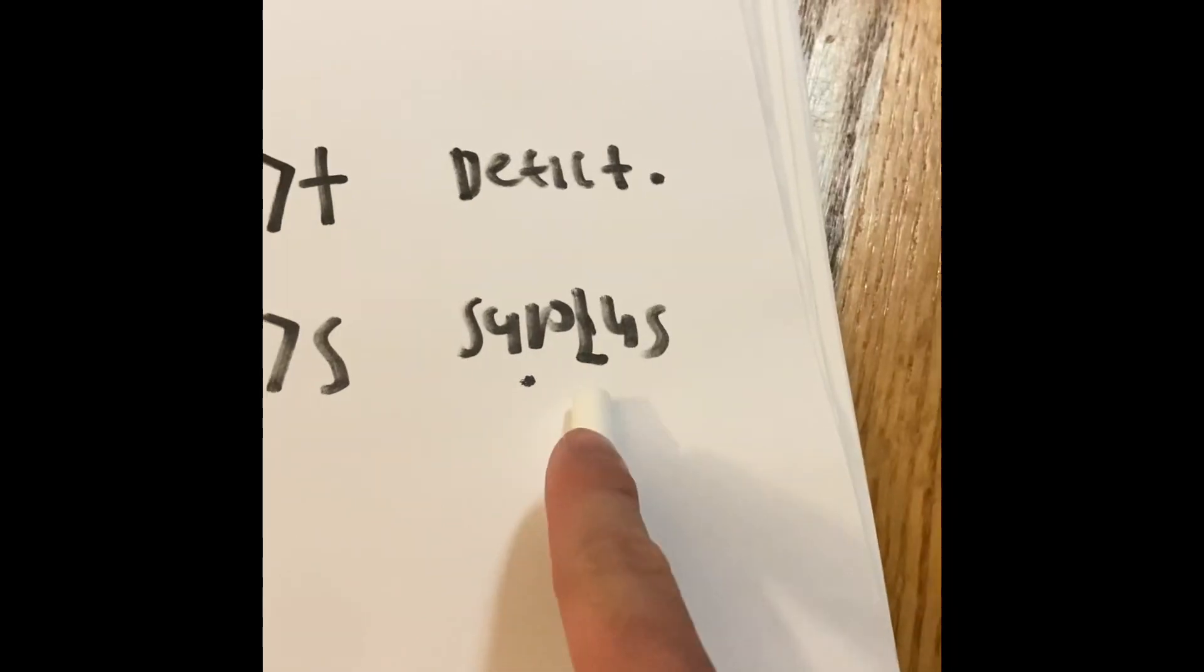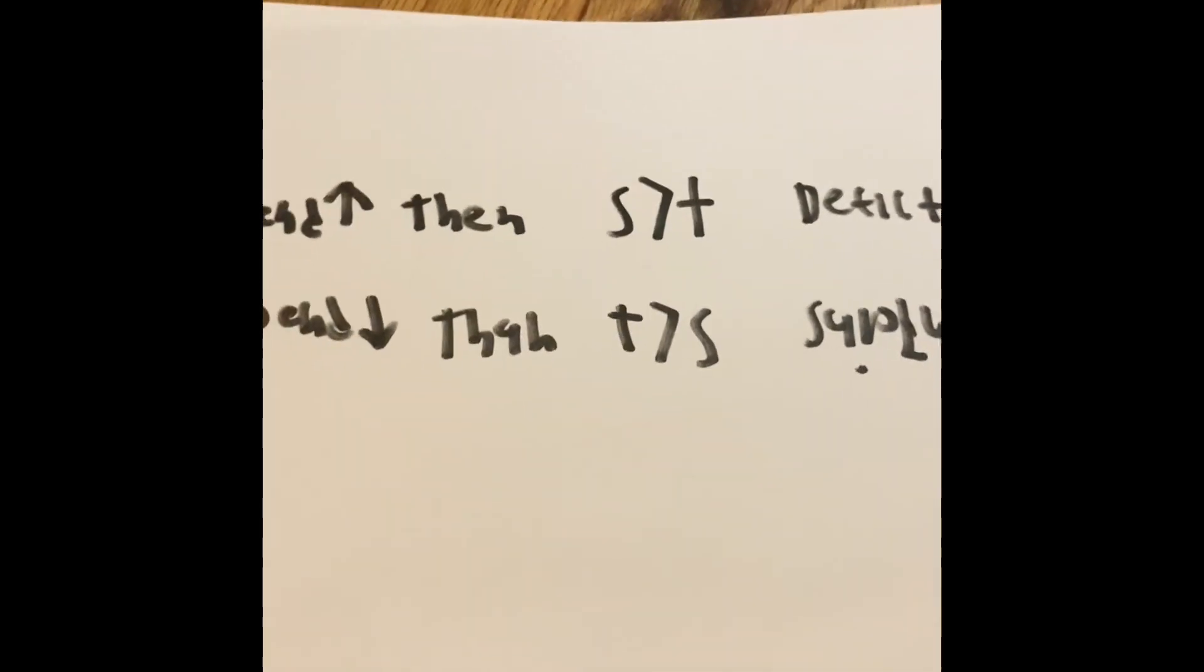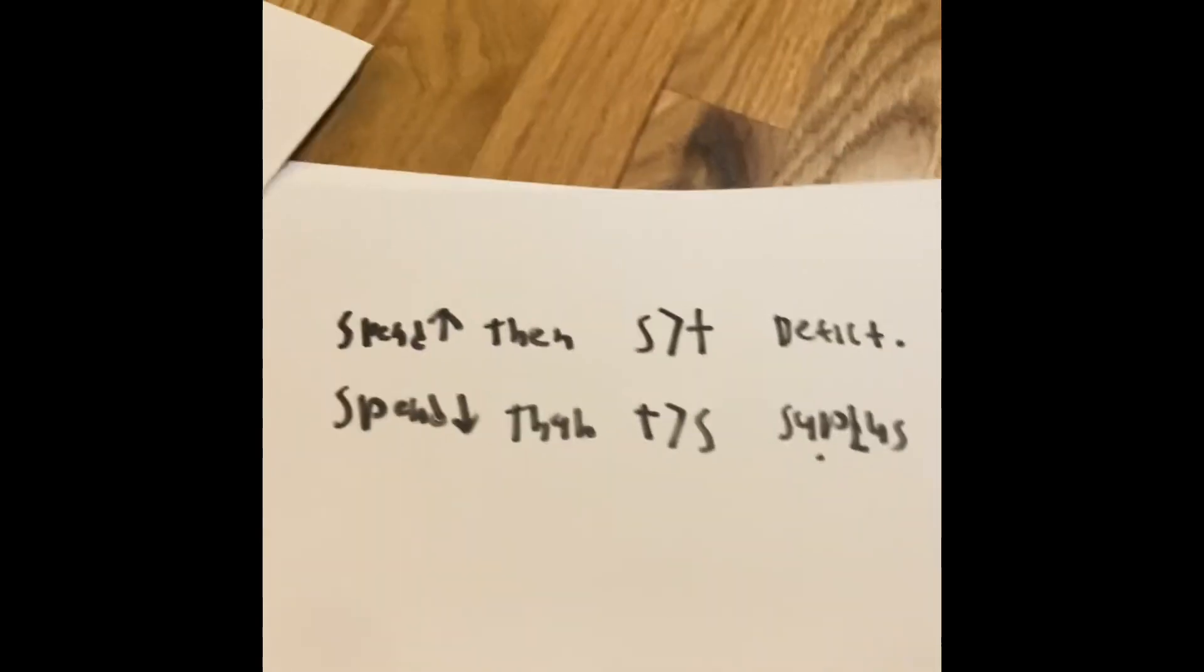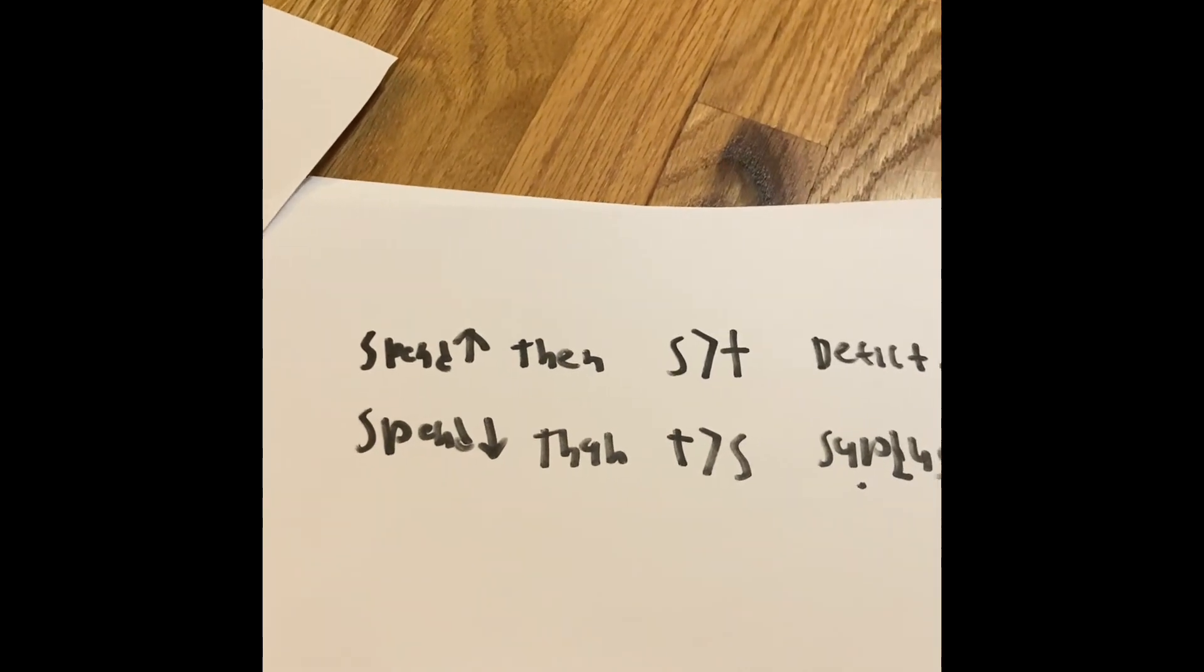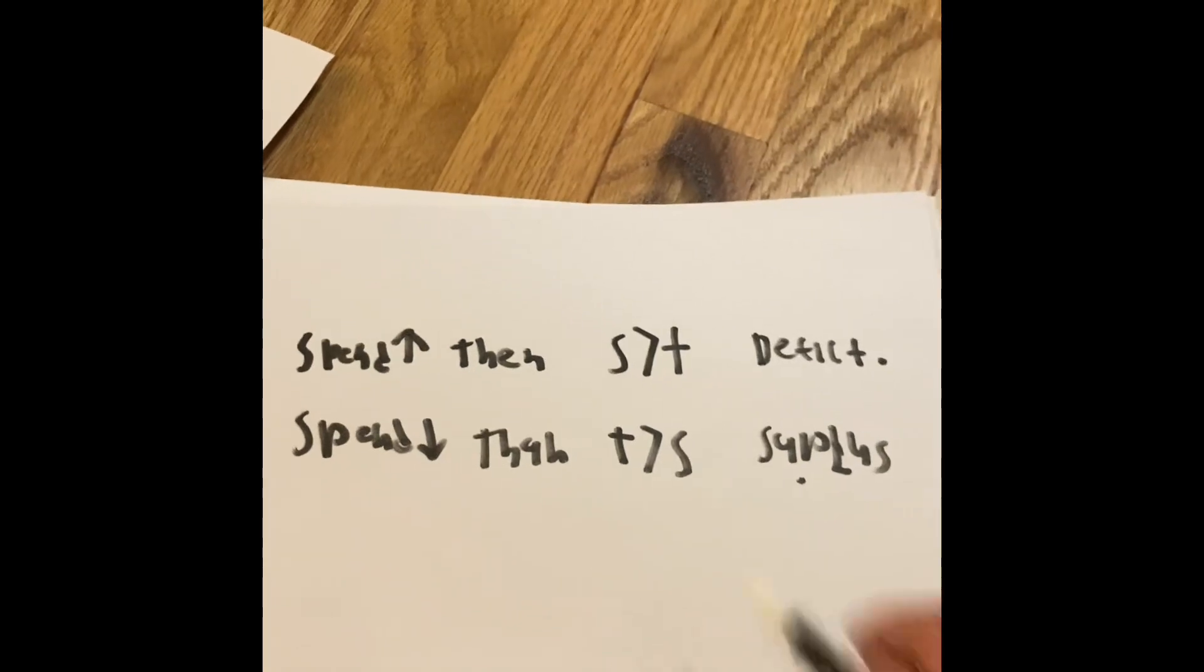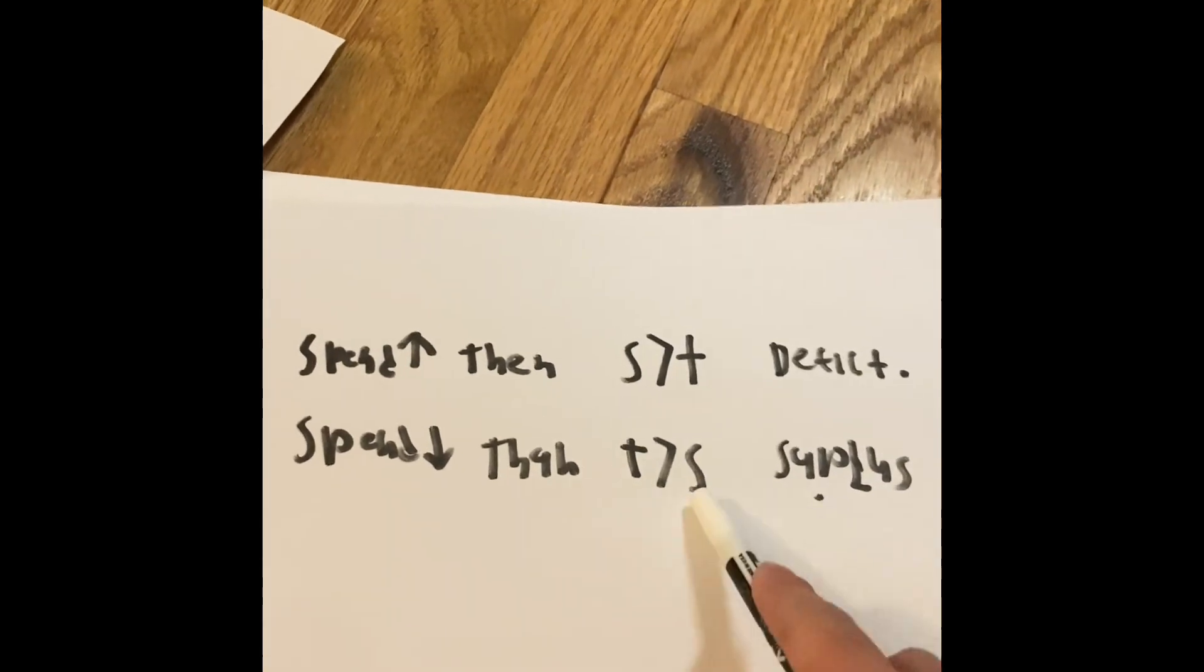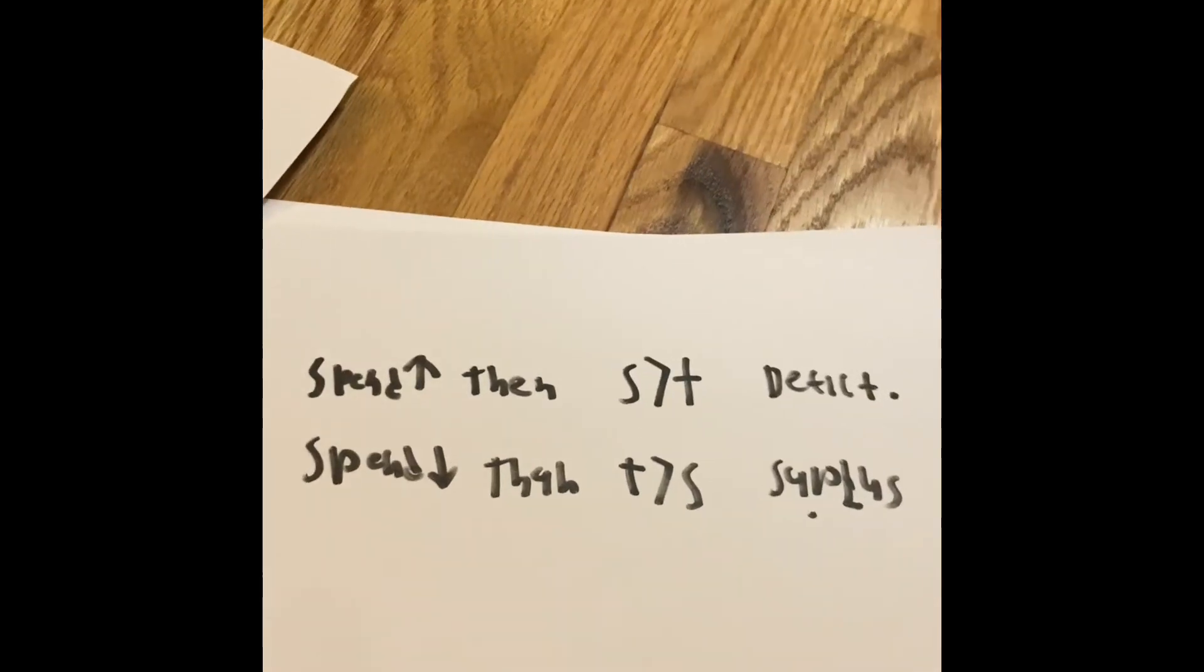So economics people or economists or expert people that do in that field understand that the government is trying to save money by spending the less amount of money they have than taxes. So they receive more taxes, but spend less than the taxes amount. Therefore, the government saves more money.